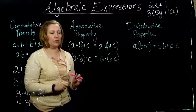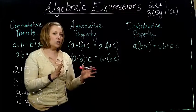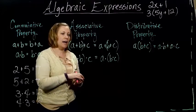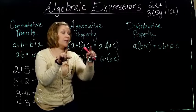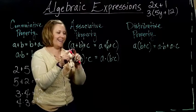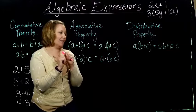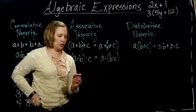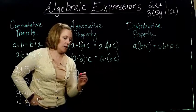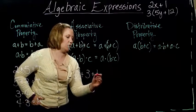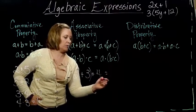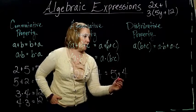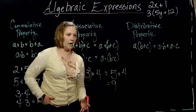So the second property we're going to use is called the associative property. And what the associative property says is that if I have 3 things or more than 2 things added together, it doesn't matter which 2 I add first. So if I think about 2 plus 3 plus 4, if I add the 2 and the 3 first, I get 5. And 5 plus 4 gives me 9.